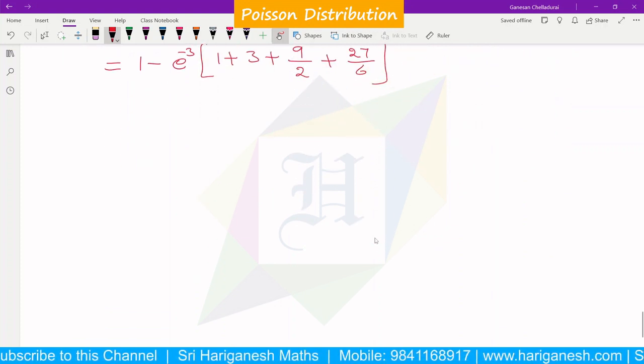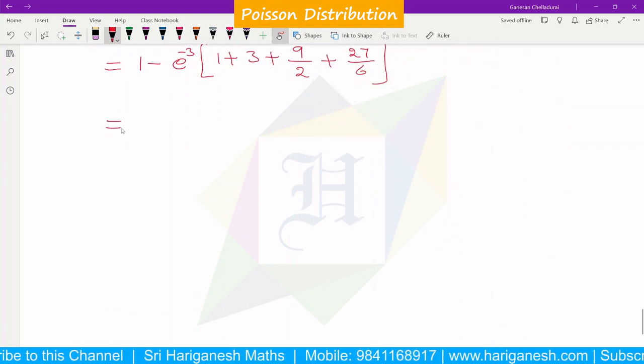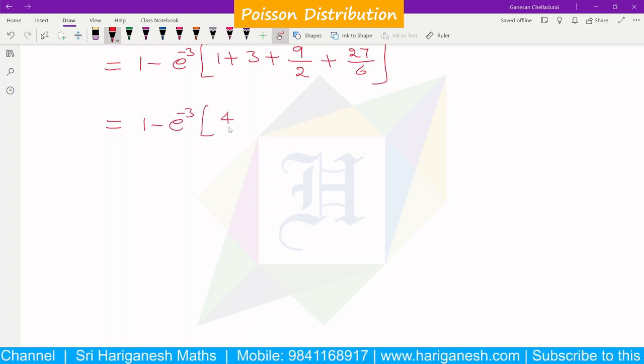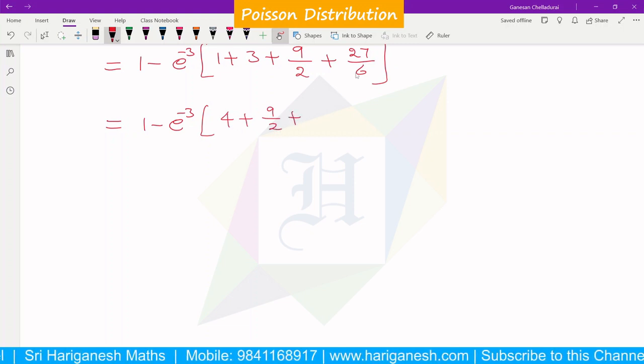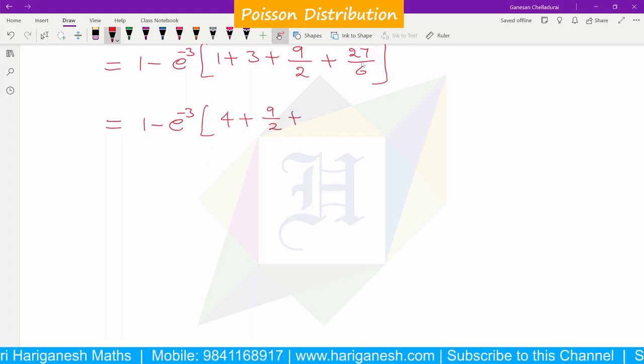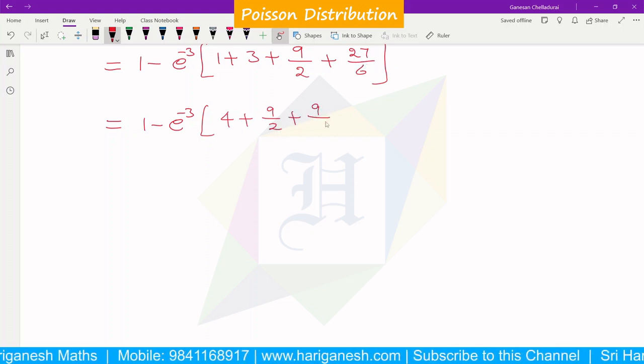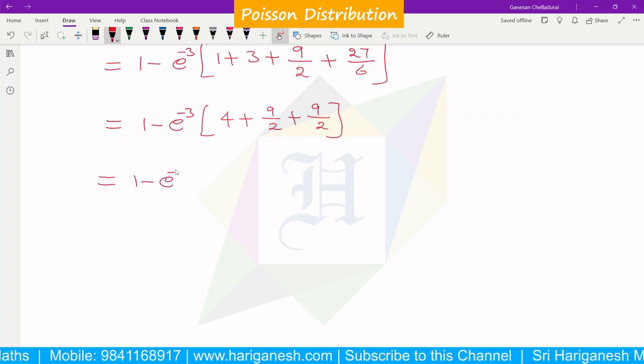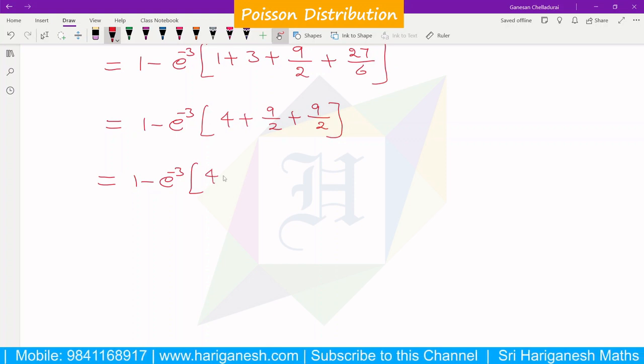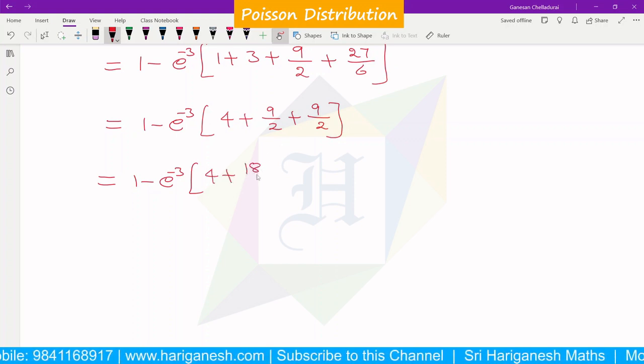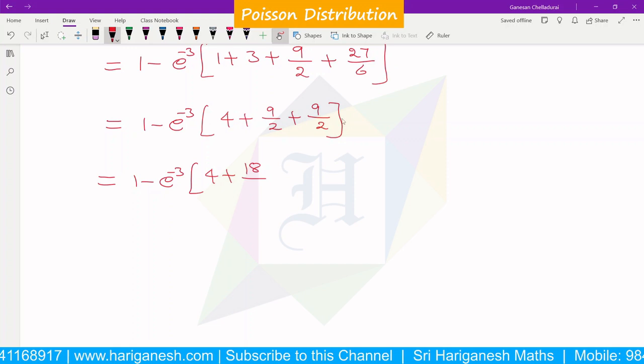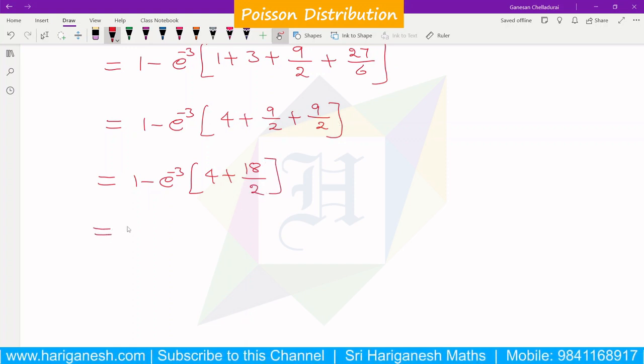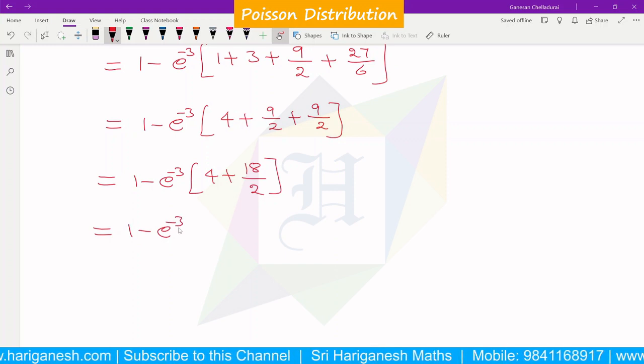If we simplify further, equals 1 minus e^(-3) times [1 + 3 is 4, plus 9/2, plus in the 3 table we can cancel to get 9/2].